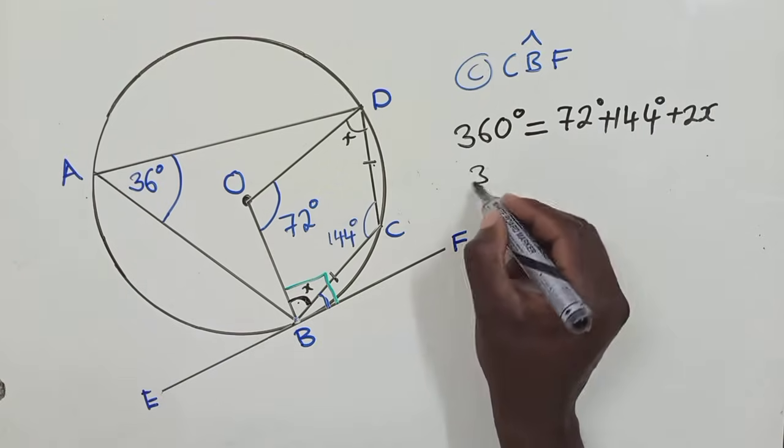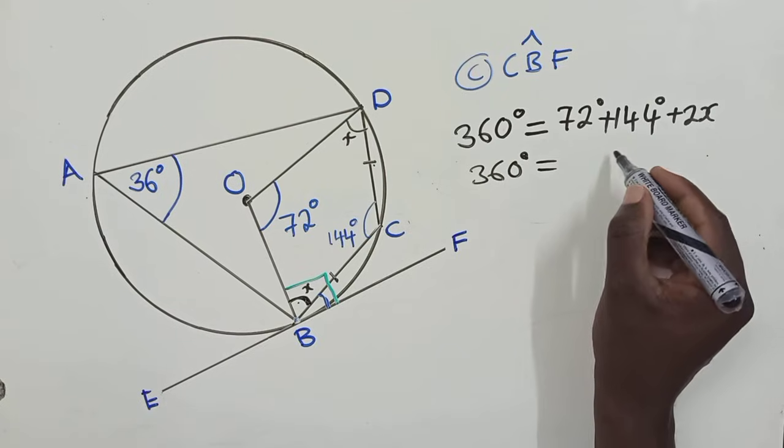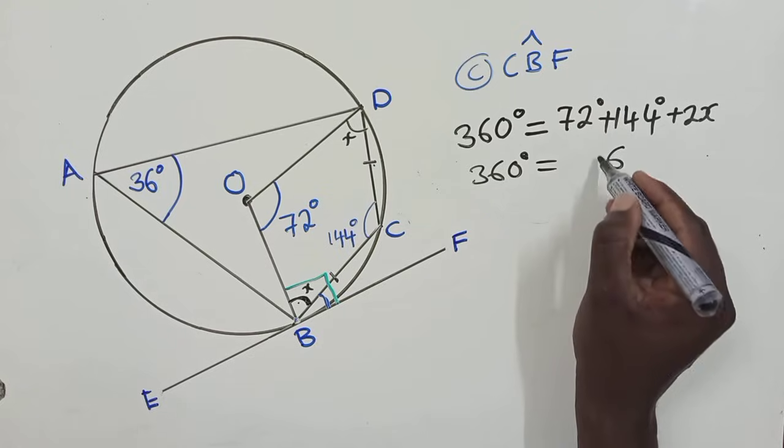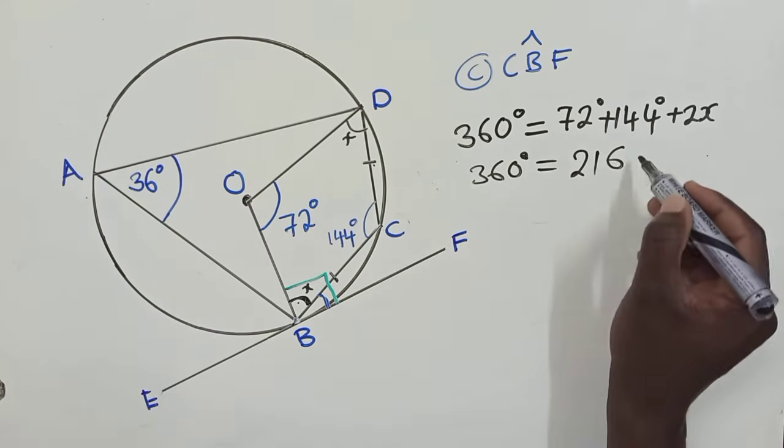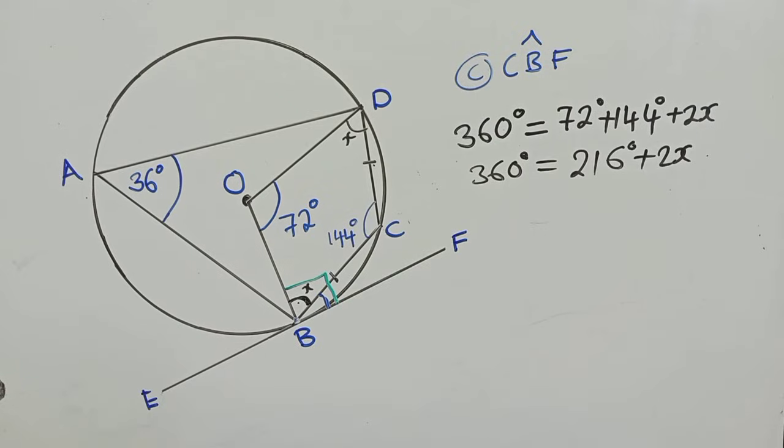So we add them and when we add, what are we getting? This is 6, this is 11, window 1, 216 degrees plus 2x. So we just confirm if the answer is okay, 72 plus 144, we're getting 216, which is okay.